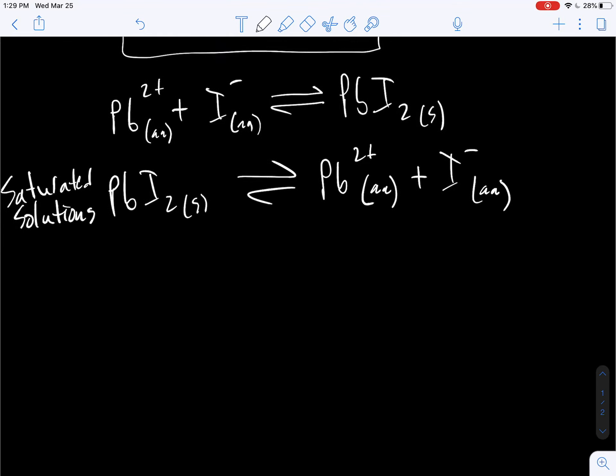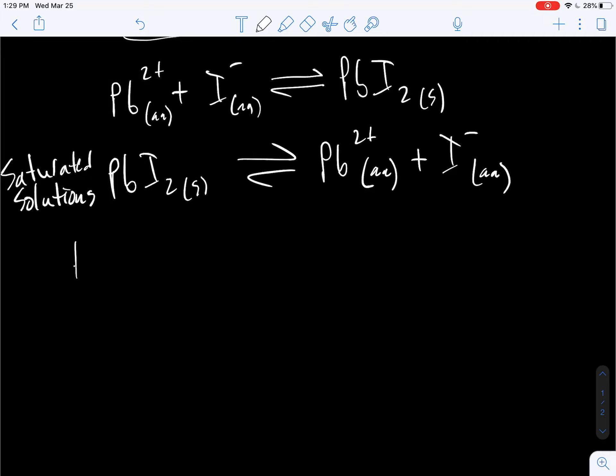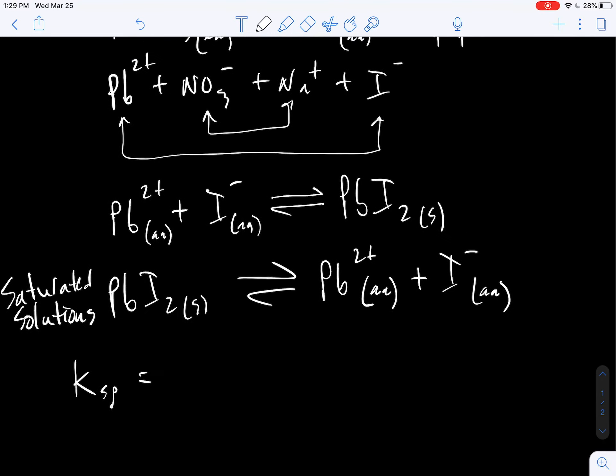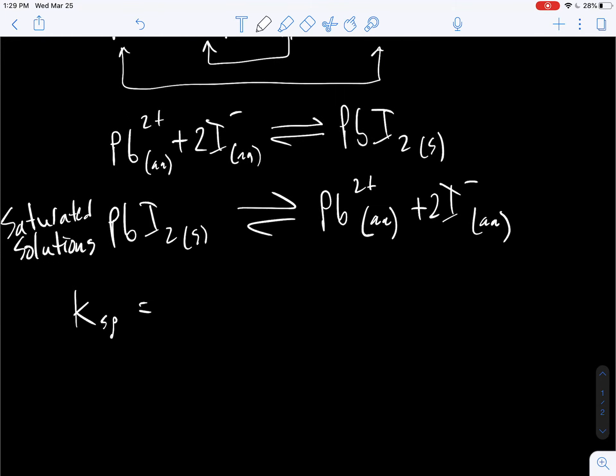Now, if we're actually going to write out the equilibrium constant here, we're going to call this Ksp. So remember the equilibrium constant here, it looks like I'm missing a 2. Don't forget that. It's the products to their coefficients, molar coefficients to the power of their coefficients divided by the reactants. So it's the concentration of Pb 2 plus in solution times the concentration of I minus in solution squared.